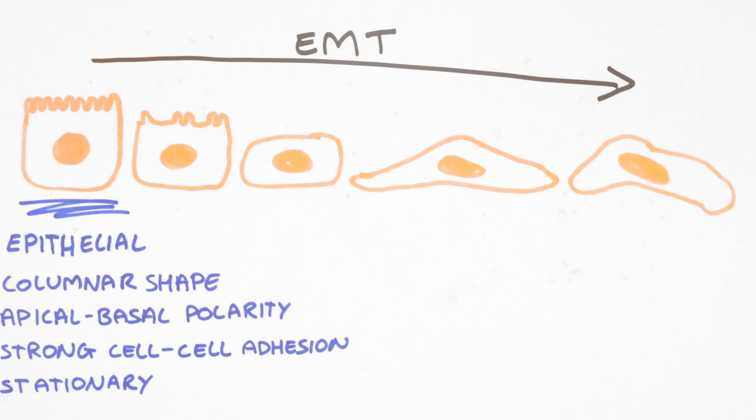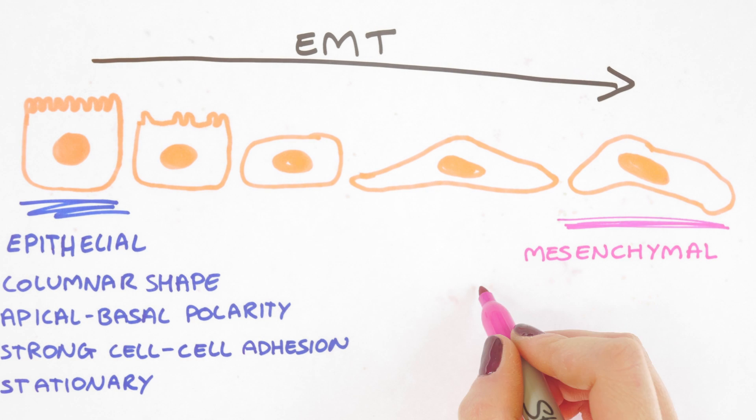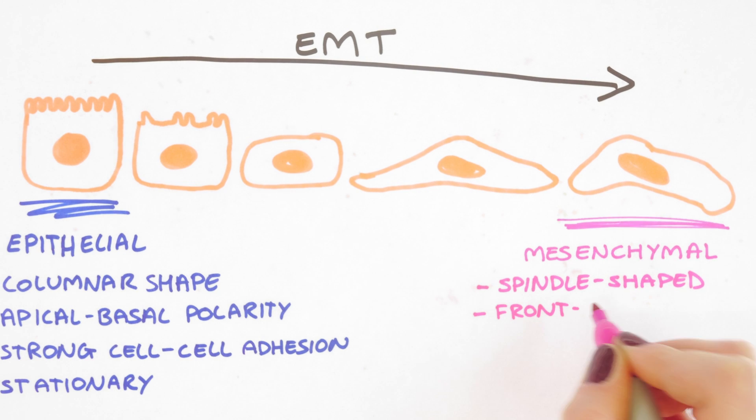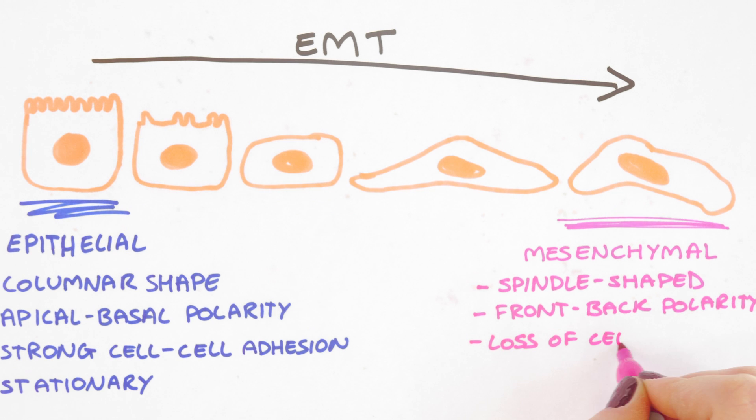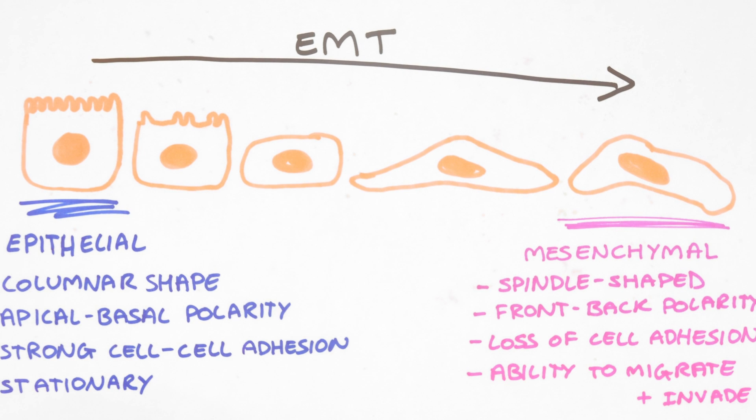This process is known as the epithelial to mesenchymal transition or EMT and once it has occurred, the now motile cell can migrate through the normal tissues and into the bloodstream, transporting it around the body to sites where it can revert back to a stationary cell and initiate a secondary tumor or metastases.